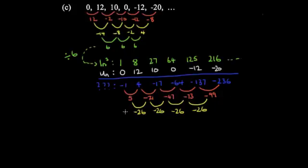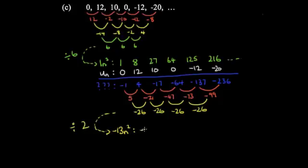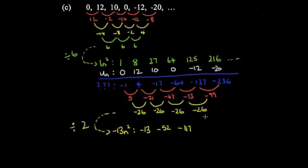Since it's quadratic, we take −26 and divide by 2, giving −13. So the coefficient is −13n². We work out the −13n² sequence: putting in 1 gives −13; putting in 2 gives −52; putting in 3 gives −117; putting in 4 gives −208.